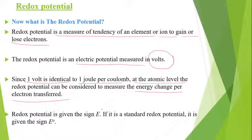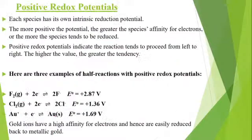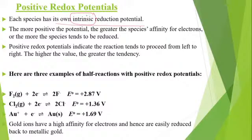Normally it is represented by E, and if it is standard electrode potential then it is represented by E°. Each species has its own intrinsic Reduction Potential. The more positive the potential, the greater the species' affinity for electrons, and the more the species tends to be reduced.